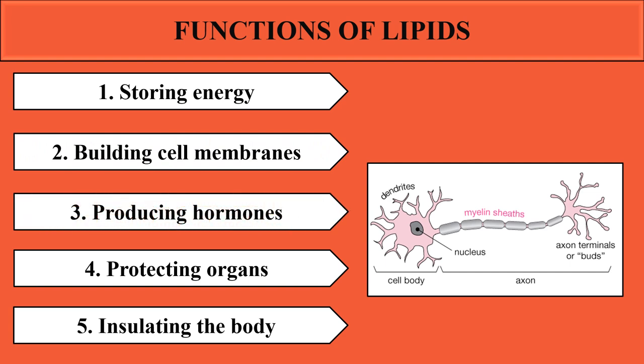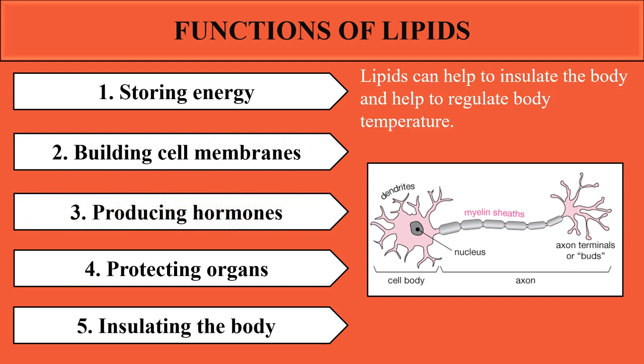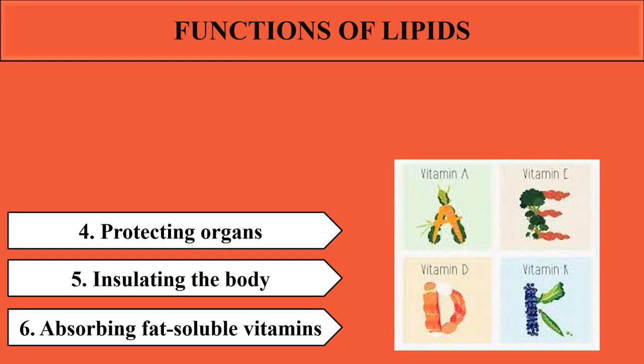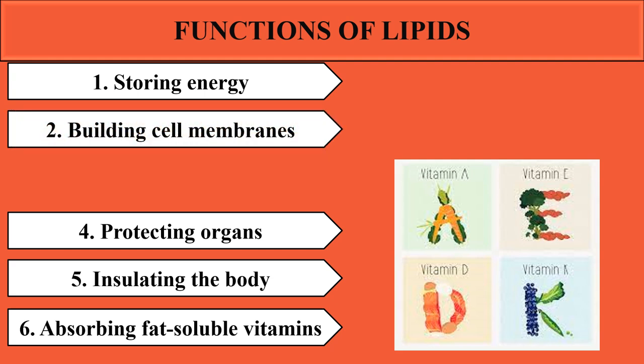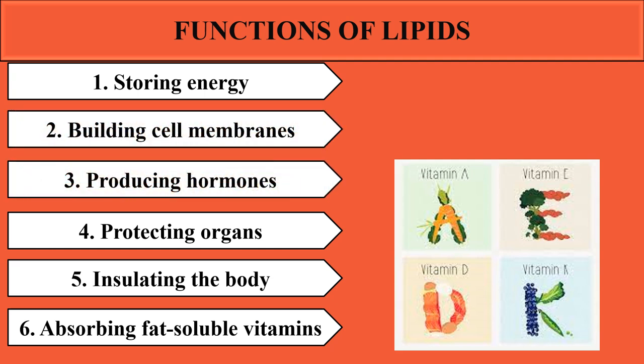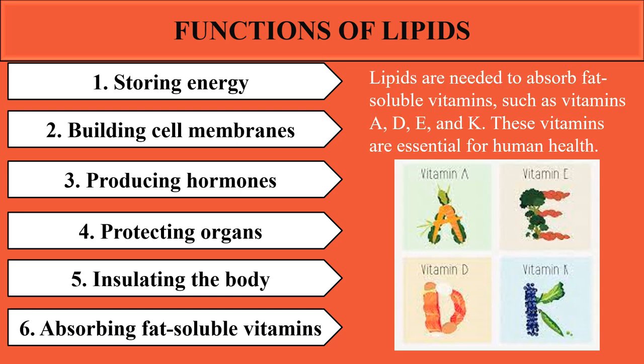Lipids also have a role in insulation. By insulating the body they protect against information loss — for example, nerve cells are insulated by lipids to prevent loss of nerve signals. This insulation is also involved in regulating body temperature. Some vitamins derived from lipids are known as fat-soluble vitamins, and lipids are involved in the absorption of these fat-soluble vitamins.